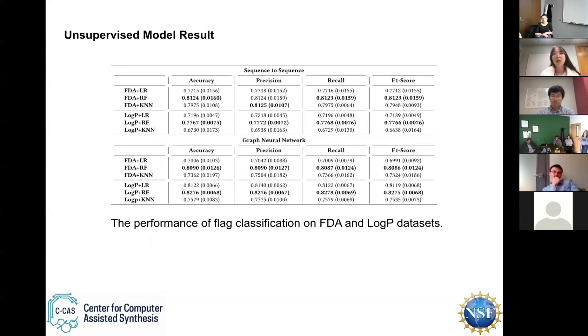And this is the result for sequence to sequence. We both use the FDA and LogP. We both use the representations to get their performance on FDA and LogP. And we compare this result with the best results published for this work. We can see it is not pretty good. So next, we use the supervised model to improve the performance.